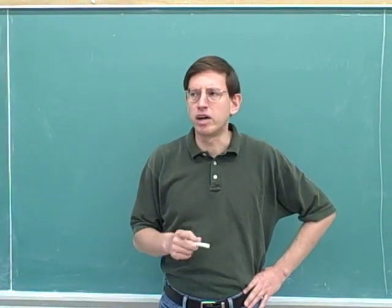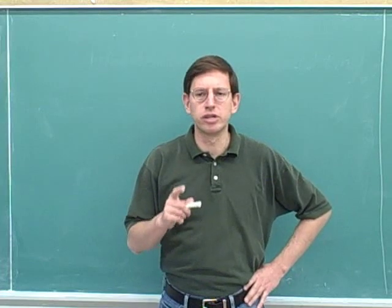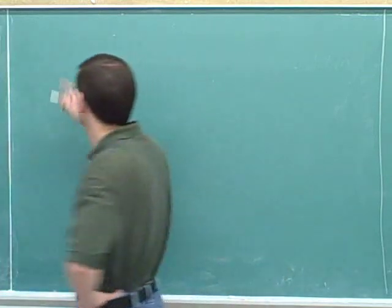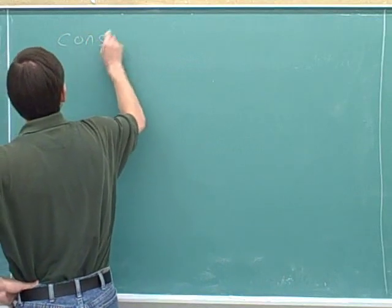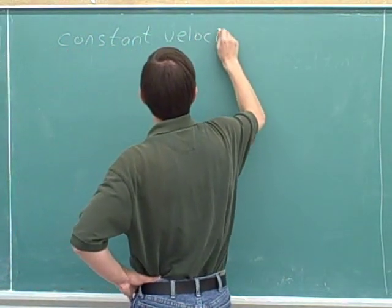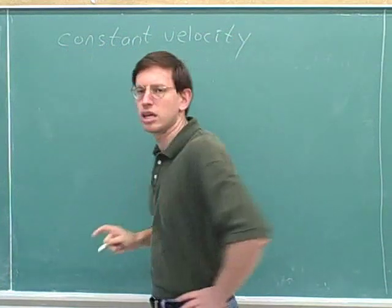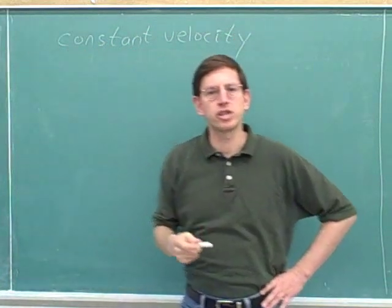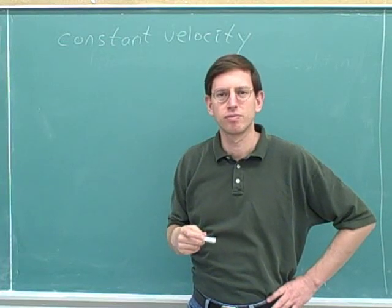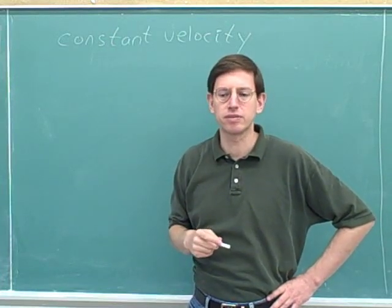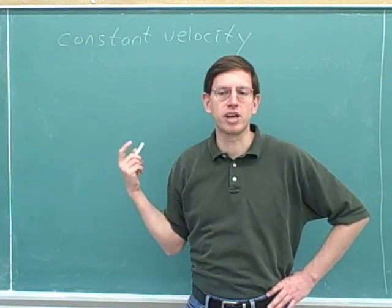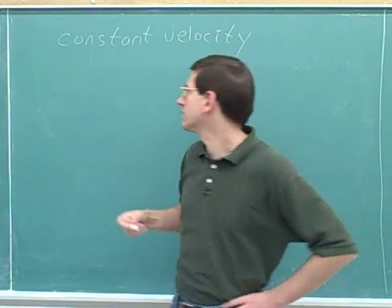Remember that we're talking about one-dimensional motion. In one-dimensional motion, what does constant velocity mean? In one-dimensional motion, it just means the object is moving at constant speed.